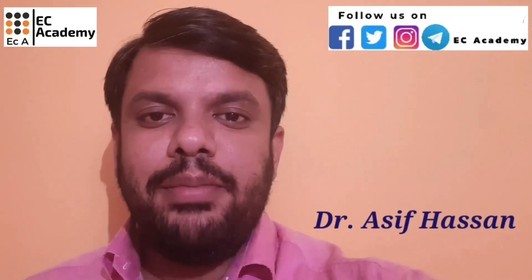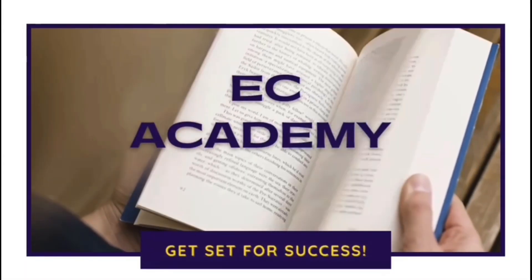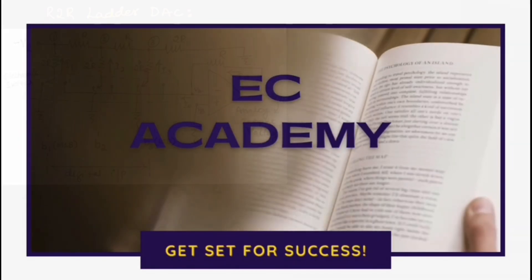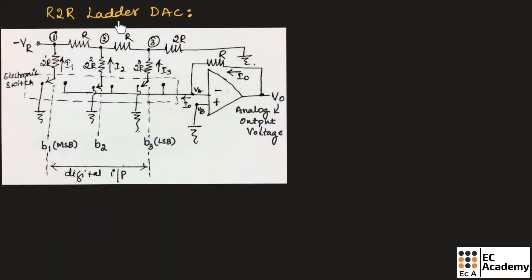Hello friends, welcome to EC Academy. In this lecture let us understand R2R ladder DAC. This is the circuit diagram of R2R ladder DAC, which is a digital to analog converter. Here the op-amp is used in inverting summing amplifier configuration, since all the inputs are connected to the inverting terminal of an op-amp. Here two resistors are used: R as well as 2R. That is why it is known as R2R ladder digital to analog converter.